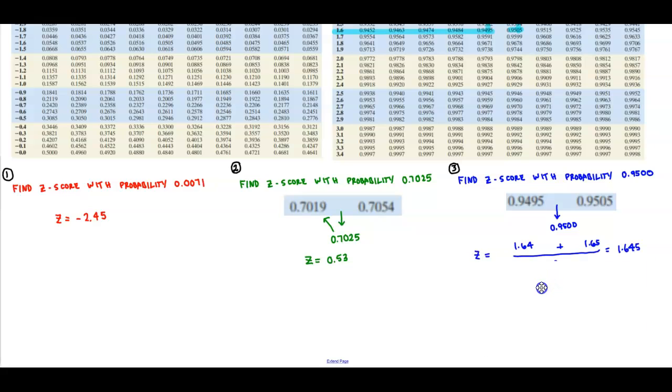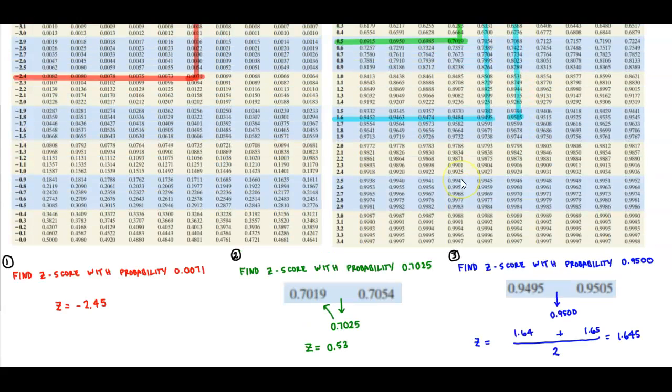So therefore, it gives us those two z-scores. So when it's exactly close to each one of them, we need to find the average of those two z-scores. So we would take 1.64 plus 1.65 and divide it by 2 to give us a z-score of 1.645. So these are the three scenarios and we want to find the z-score when we're giving the area using the table.